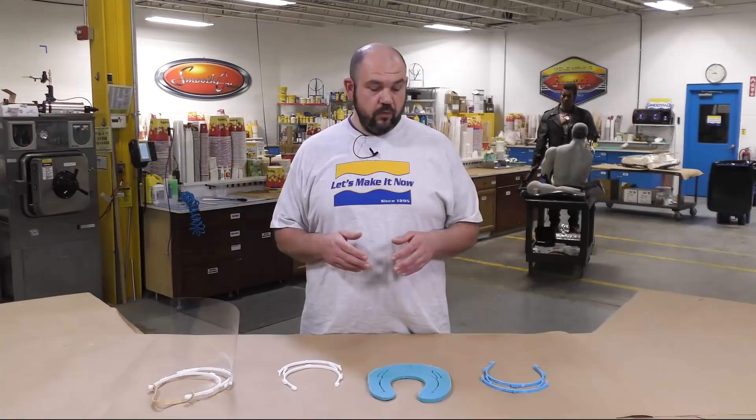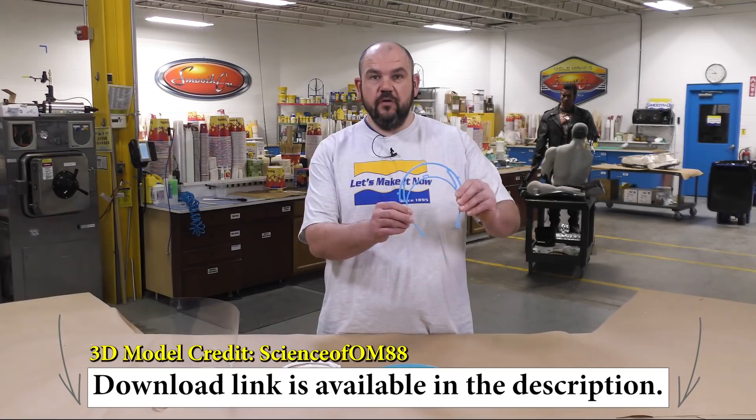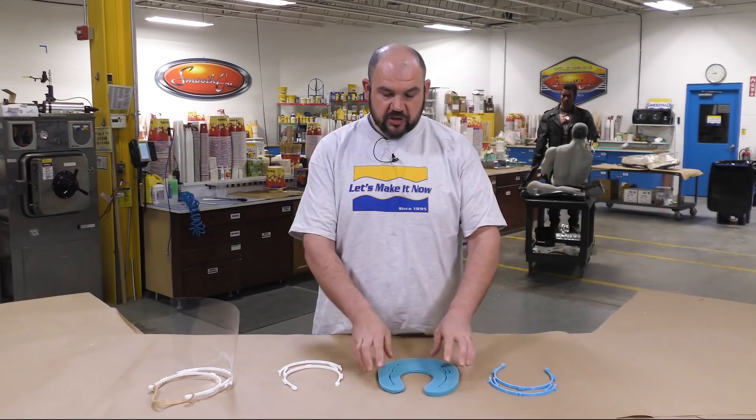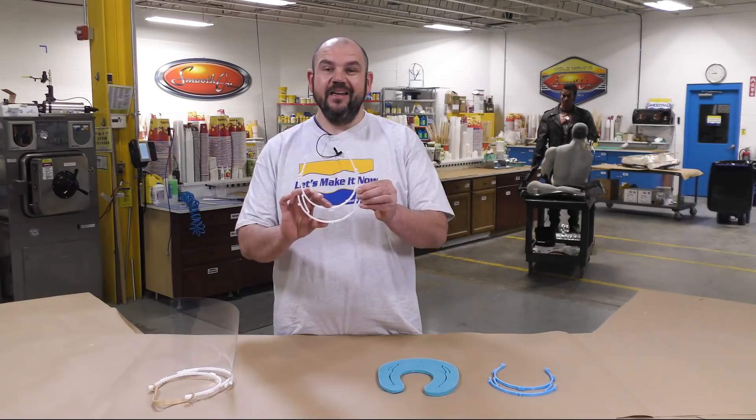We're going to go from a 3D printed model of a frame, which I'm going to give you the files for in the description, to a fast setting silicone mold made out of MoldStar 16 Fast, which is going to set in 30 minutes, to a casting made out of SmoothCast 65D.